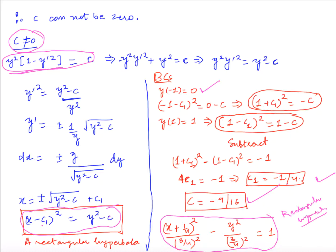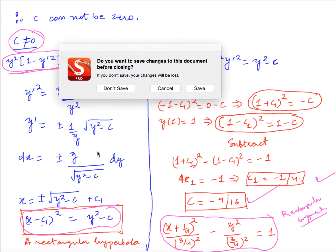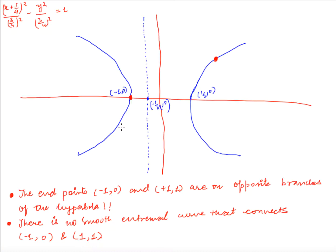How does this hyperbola look? The boundary points are at (1, 1) and (-1, 0), which lie on two different branches of the hyperbola. So we cannot connect them with a smooth function. If the boundary points were on the same branch, we could use it as a solution. But as it stands, we cannot find a smooth extremal for this functional.